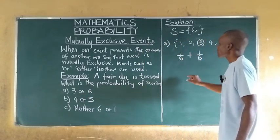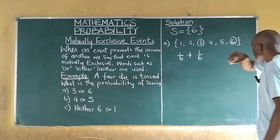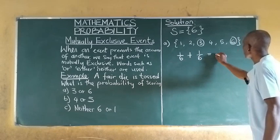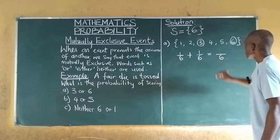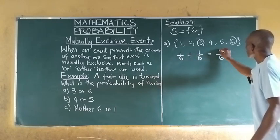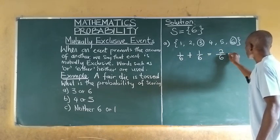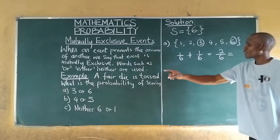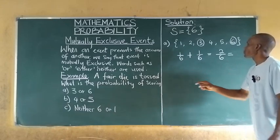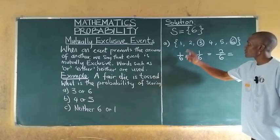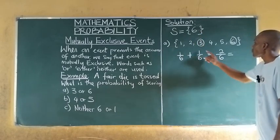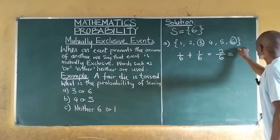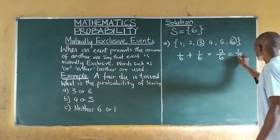If six shows up, it is also one over six. So we are asked if three or six shows up — it means one over six plus one over six. The LCM here is six, and one plus one is two, so the probability of three or six showing up is two over six.